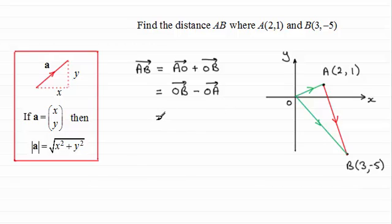Anyway, what we've got then is O to B as a column vector is going to be the vector (3,-5), and from that we just need to subtract the vector O to A which is (2,1). And in the usual way, if you subtract those, you're just going to get 3 minus 2 which is 1, and -5 minus another 1 is -6.